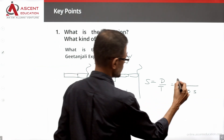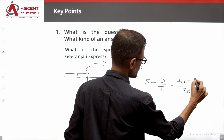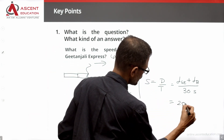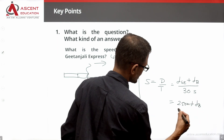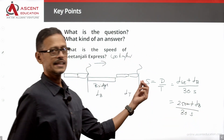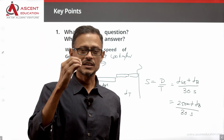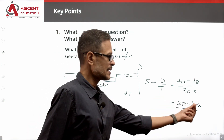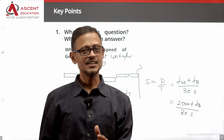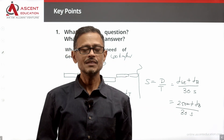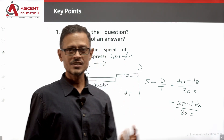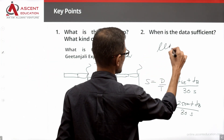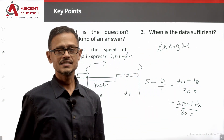So the total distance traveled equals the length of Geetanjali Express plus the length of the bridge. The length of Geetanjali Express is 250 meters. Therefore: speed = (250 meters + length of Subarnarekha Bridge) / 30 seconds. The data is sufficient when this gives us one single unique value.